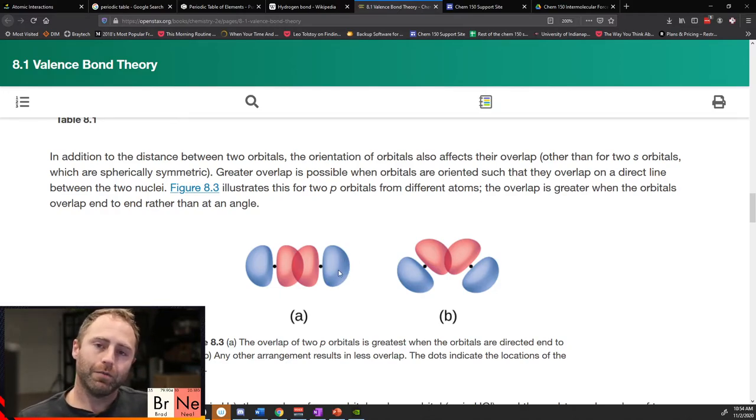If you have these two different atoms and you bring them close enough together and if the phase is correct, so they both got to be the exact same phase, you can get this overlap region and this overlap region is what we would say is the valence bond or the bond.